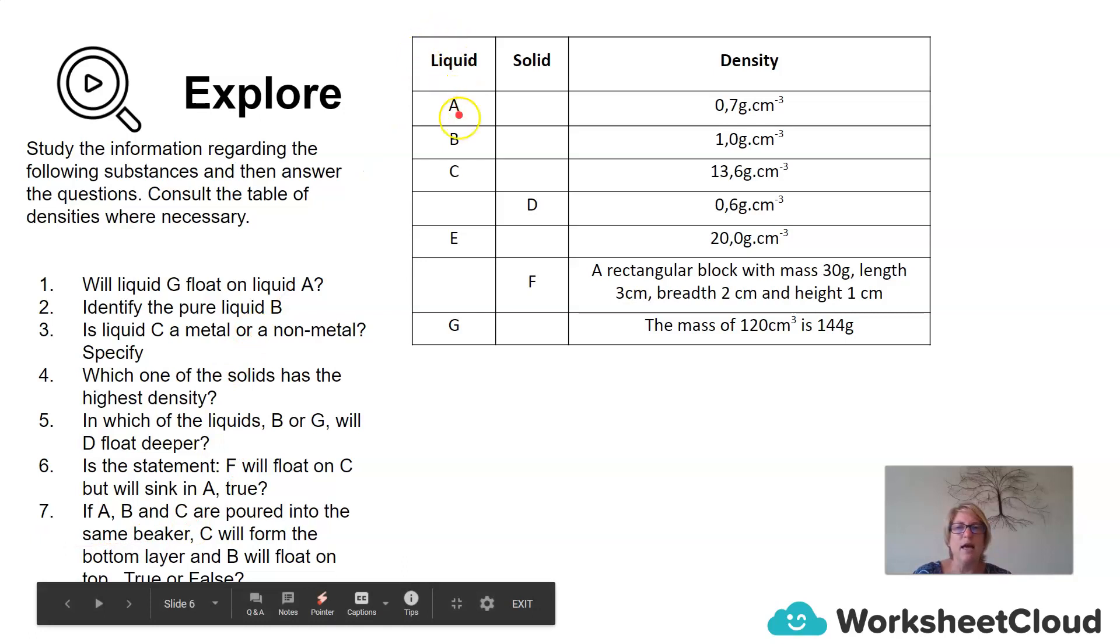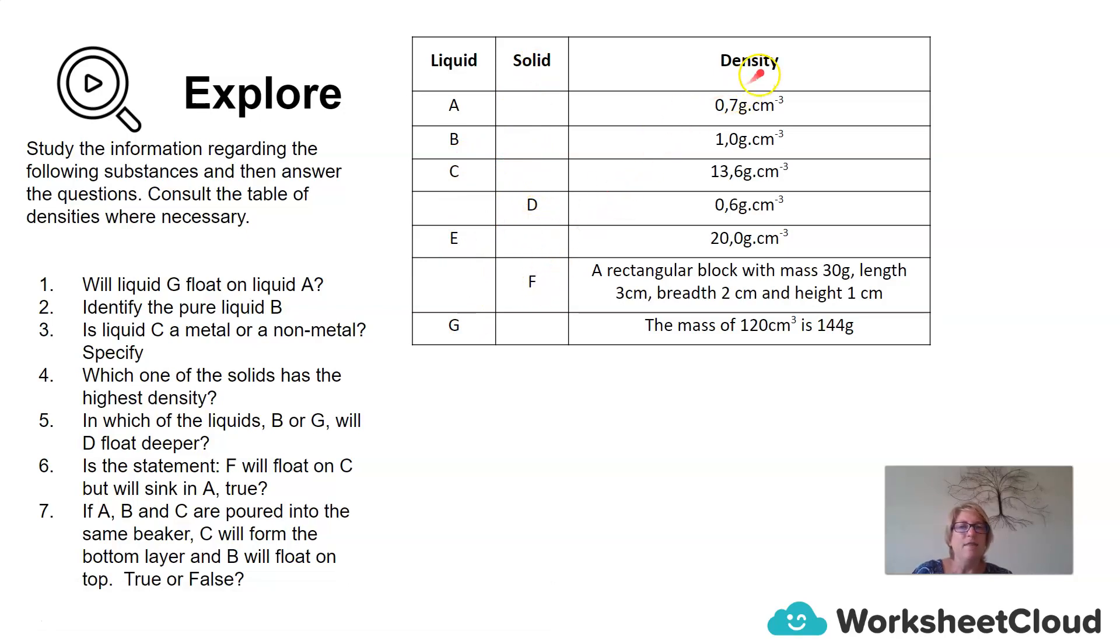Here we have liquids A, B, C, E, and G, and they've given us a solid D and F. Then they've given us the density for substance A, B, C, D, and E. But then for F, they've given us the measurements of a rectangular block. They've told us that the block is 30 grams, and it has a length of 3 centimeters, a breadth of 2 centimeters, and a height of 1 centimeter. And then for G, they've given us a mass of 144 grams, and they've told us that the block is 120 cubic centimeters.